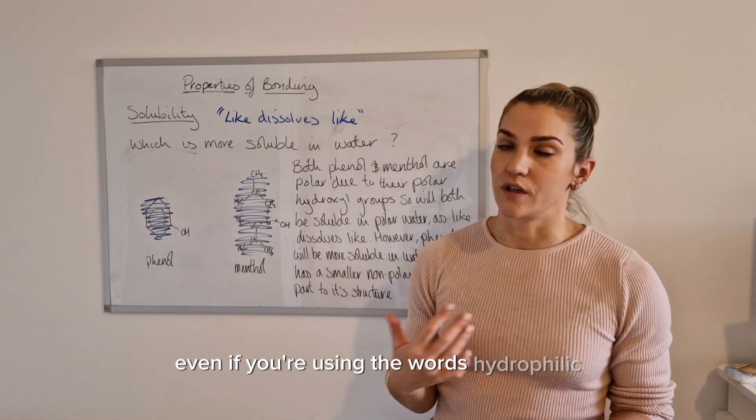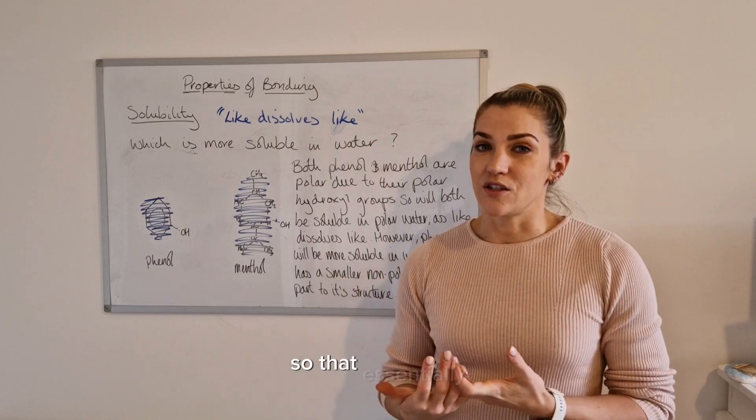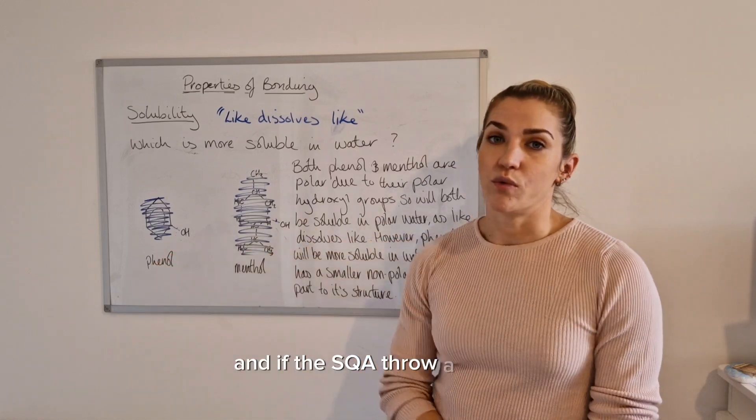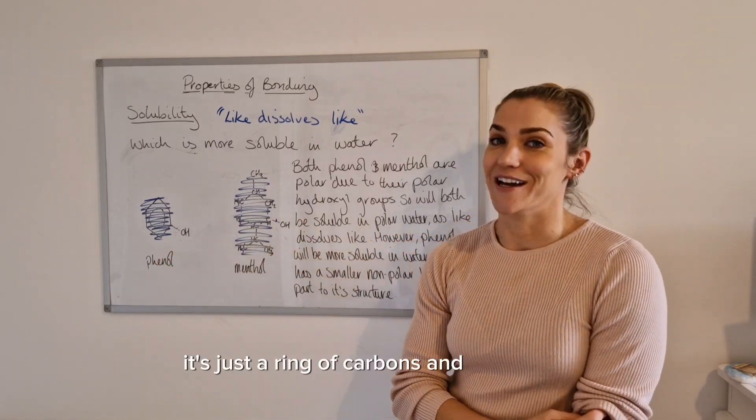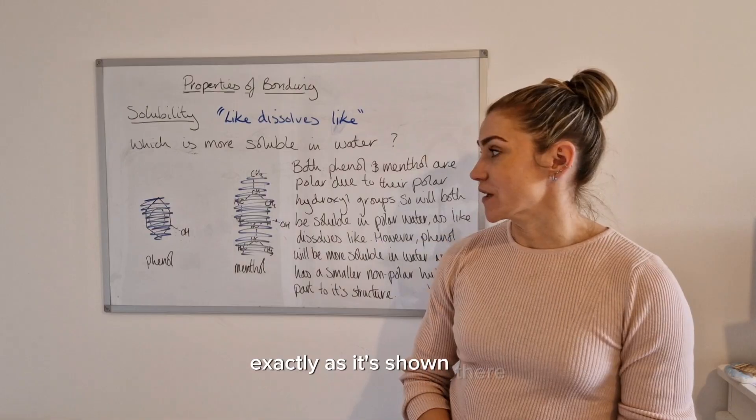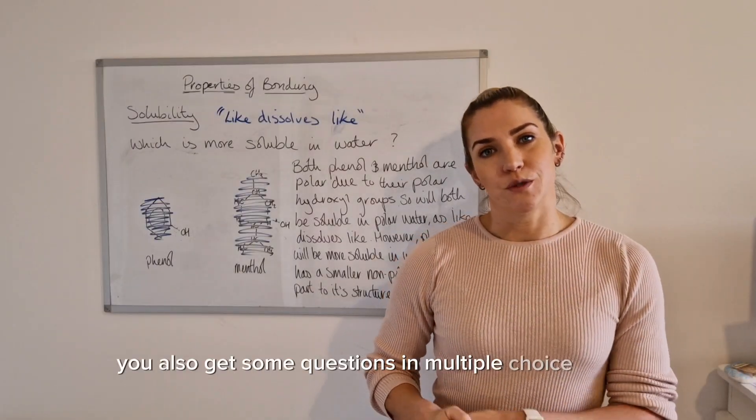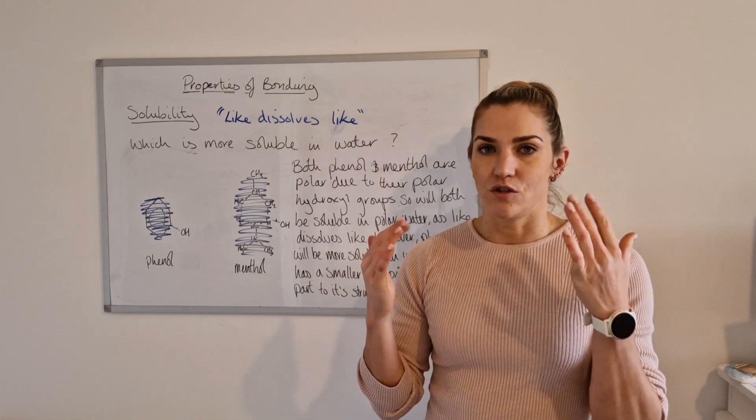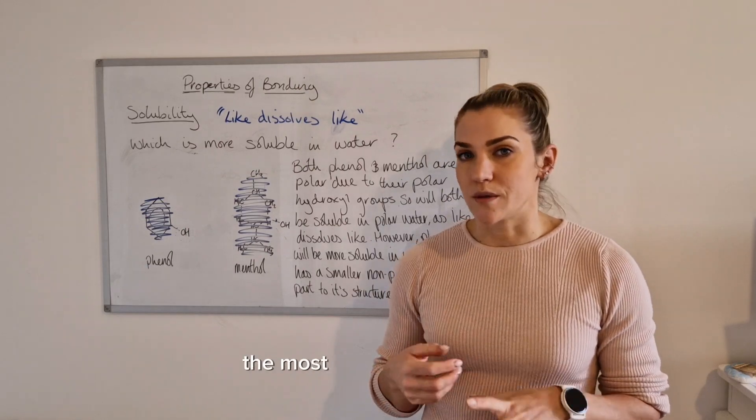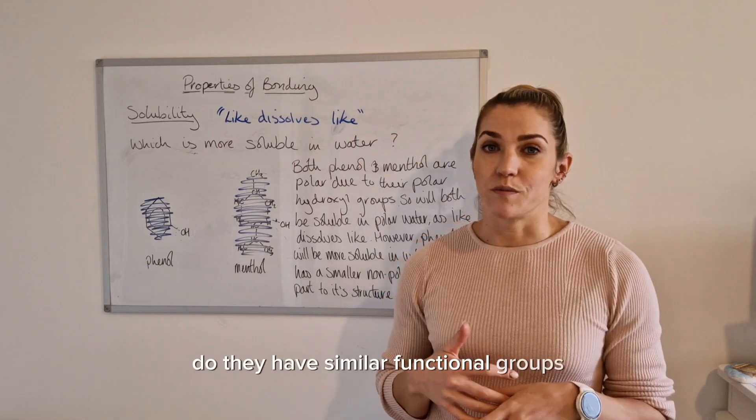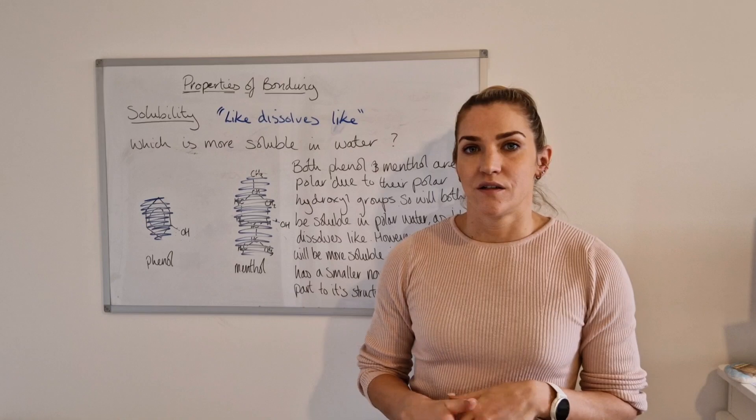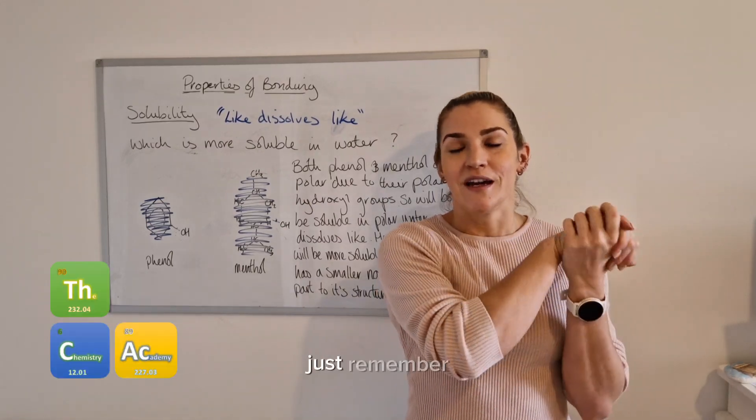So that essentially is everything you need to know on solubility. The key phrase is like dissolves like. And if SQA throw a bolt at you, just remember it's just a ring of carbons and hydrogens. So it's nonpolar and really nothing to worry about. And if you need to draw it, you just copy it down exactly as it's shown there. You also get some questions in the multiple choice where it will give you a molecule and ask you to pick which of the following molecules would be best solvent. You're really looking to see which ones look the most similar in structure. Do they have similar functional groups? Because if they do, they'll be able to interact with each other better and mix in and be soluble. So when you're presented with the word solubility, just remember, like dissolves like.